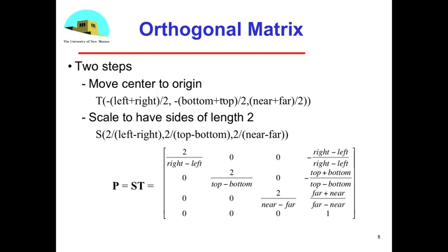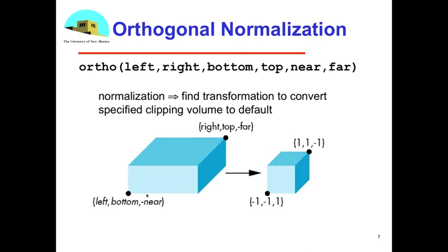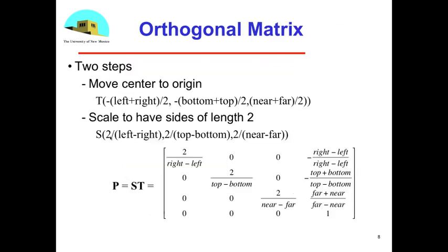Now that I've done that, the scaling is actually fairly easy. If I look at what I want to do, I want to get something that has, let's look at the x direction. It's something that has a length right minus left to have a length of two going from minus one to one, so the scale factor is right here. It's simply two over left minus right. For the y direction, it's two over top minus bottom, and for z, it's two over near minus far. So I have the two matrices I want.